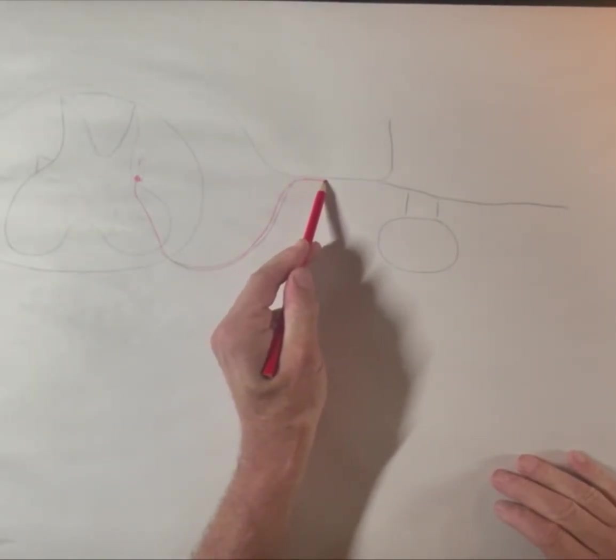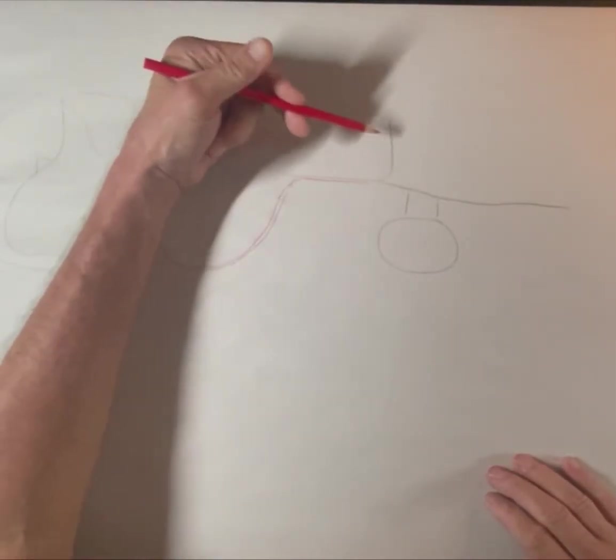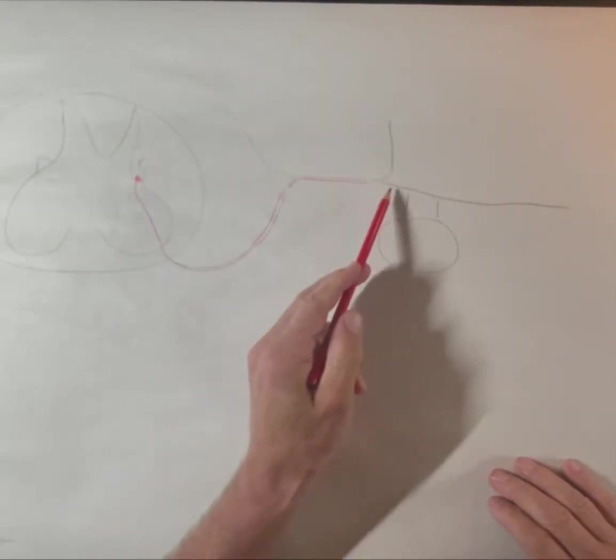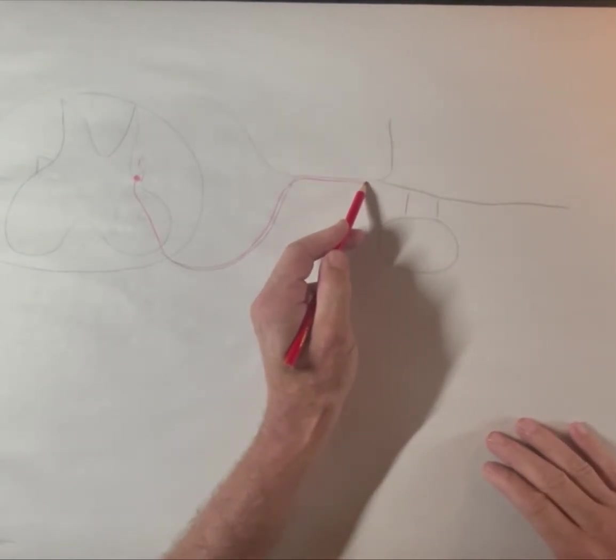So this axon is traveling along in the spinal nerve for just a brief moment before that nerve splits into the dorsal and ventral rami. It continues just for a little ways into the ventral ramus.